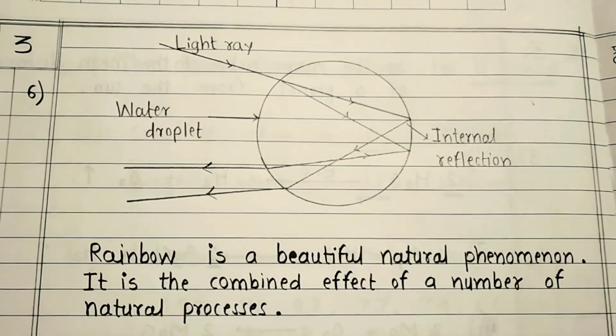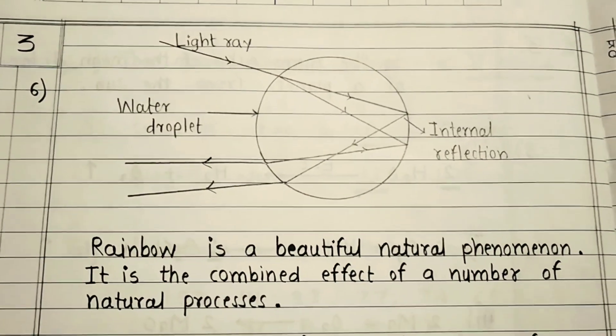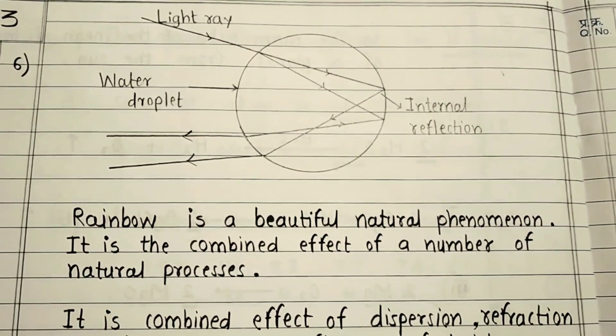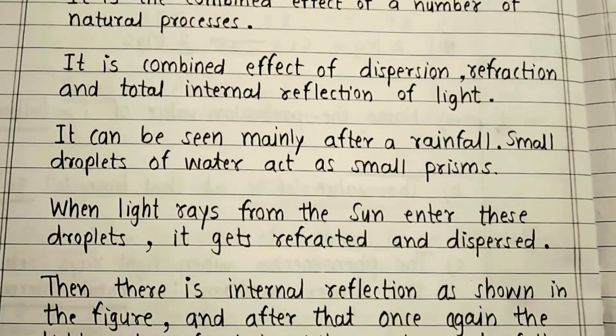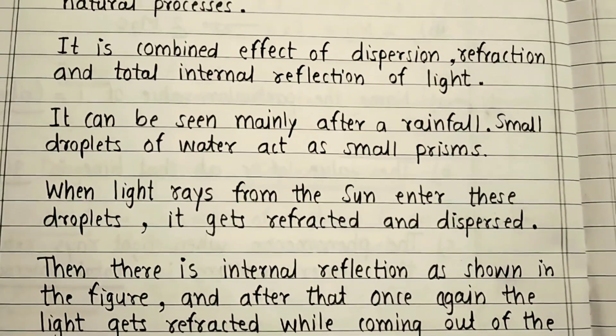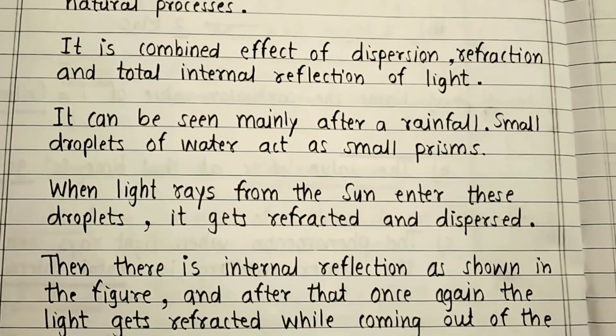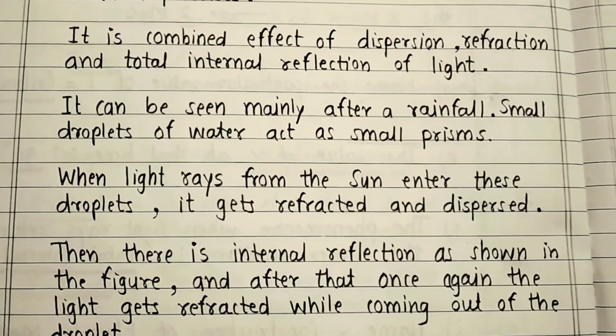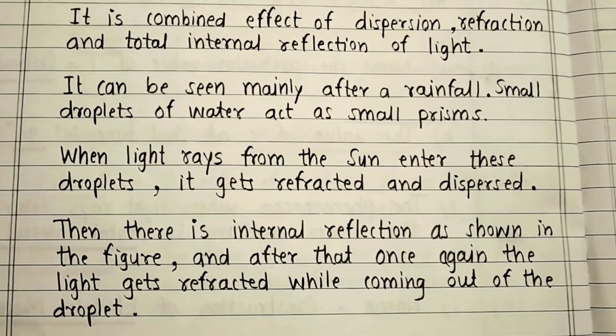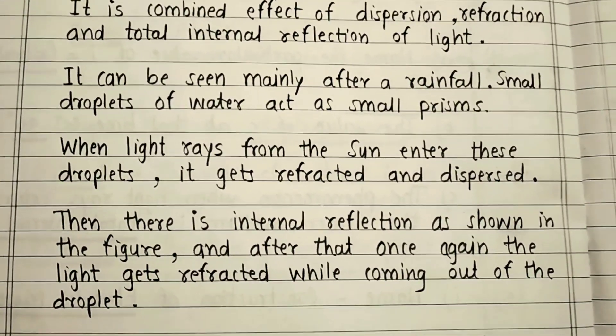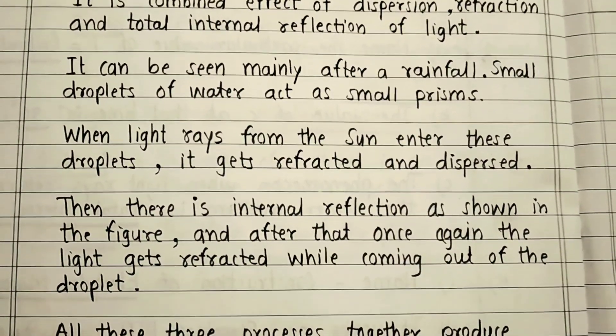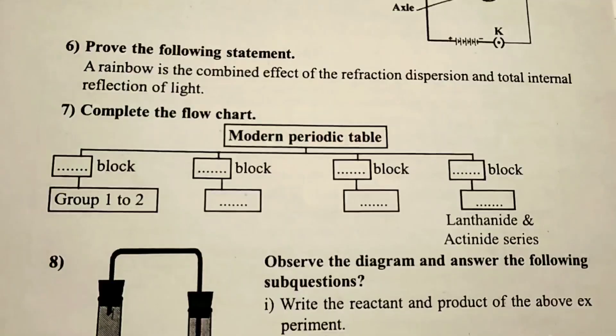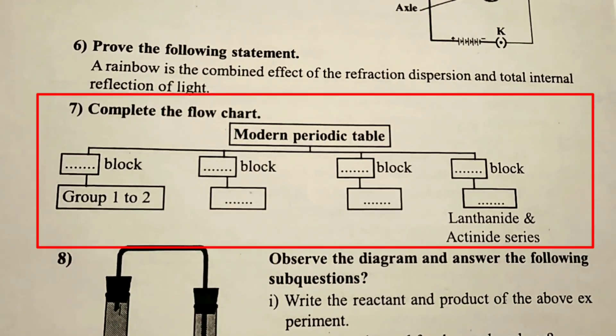Question 6: Prove the following statement. Rainbow is the combined effect of the dispersion, refraction and total internal reflection of light. Observe the given diagram carefully. Rainbow is a beautiful natural phenomenon. It is the combined effect of a number of natural processes. It is a combined effect of dispersion, refraction and total internal reflection of light. It can be seen mainly after a rainfall. Small droplets of water act as small prisms. When light rays from the sun enter these droplets, it gets refracted and dispersed. Then there is internal reflection as shown in the figure. And after that, once again the light gets refracted while coming out of the droplet. All these three processes together produce the rainbow.